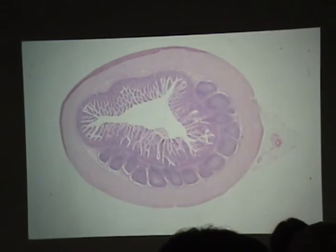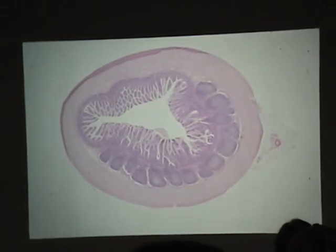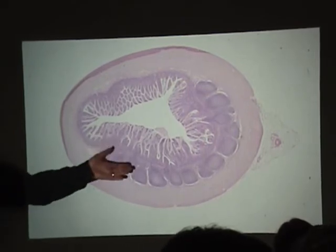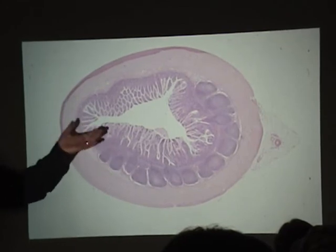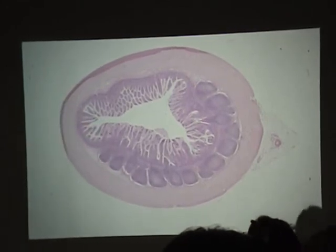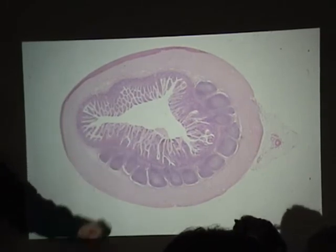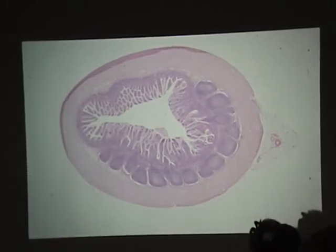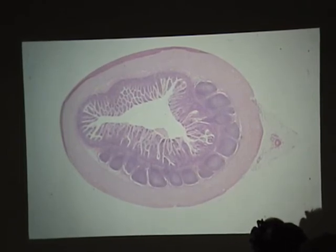Now on the lymphoid tissue — we are clearly looking at Peyer's patches. Peyer's patches will tell us we're looking at what region of the small intestine. And we know it's small intestine because we can see all these finger-like projections which are villi.